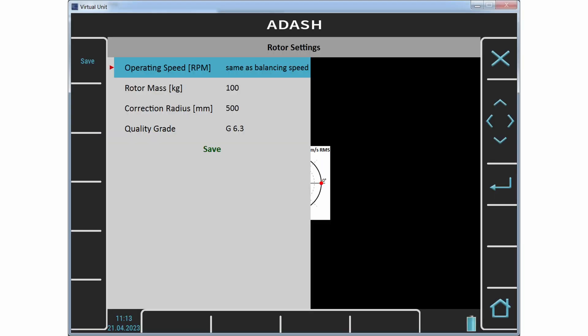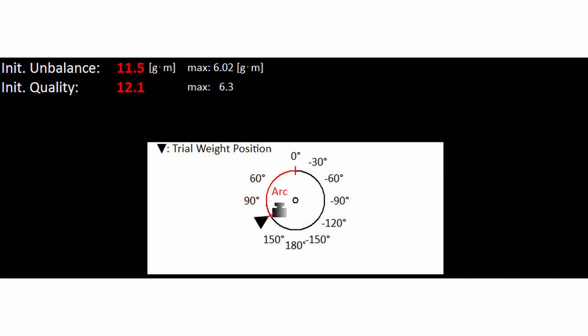And now the practical example. The rotor parameters I define in rotor settings menu. It is rotor mass in kilograms. It is correction radius in millimeters. In this radius we mount balancing mass. And the required quality grade. The initial residual unbalance we know after trial run. It is the mass which we should mount to the specified radius to balance the rotor. It is on the opposite side of the heavy spot.